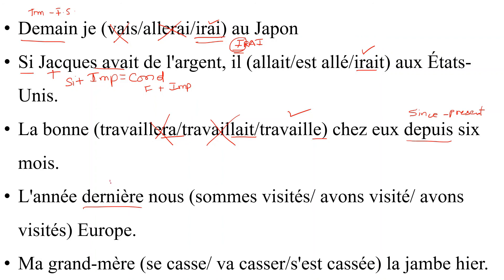Next: 'L'an dernier, nous — Europe.' 'L'an dernier' means 'last year' — passé composé. All three options are passé composé, so be careful. The verb is 'visiter': cancel -er, add accent to get participle 'visité'. 'Visiter' is not in DR MRS VANDERTRAMP, so use avoir. 'Avoir' for 'nous' is 'avons'. With avoir, no agreement — participle stays 'visité'. Answer: 'avons visité'.